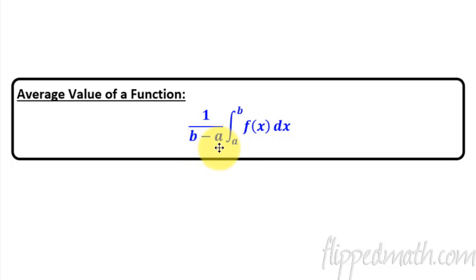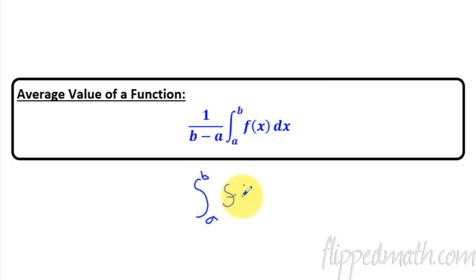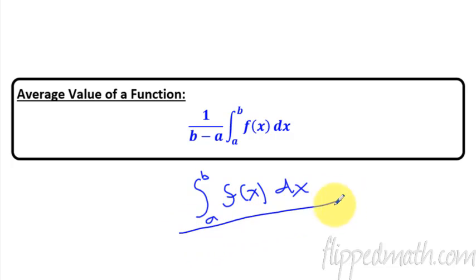Let's get this written down. The formula is one over (b minus a) times the integral from a to b of f(x) dx. Some textbooks write it as the integral from a to b of f(x) divided by (b minus a) — that is exactly the same thing as one over (b minus a).